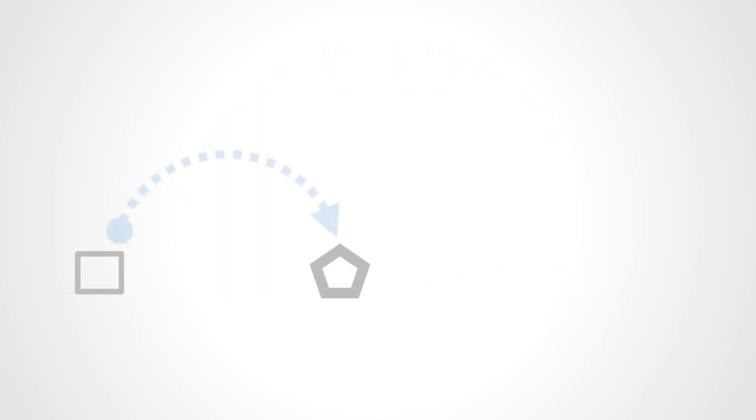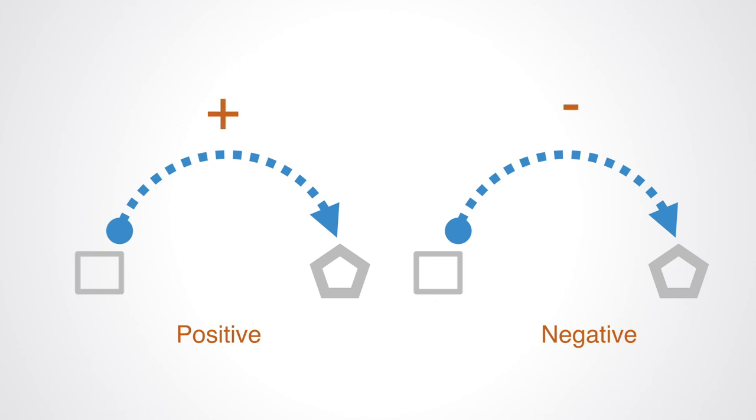There are two types of cause and effect relationships in CLDs, positive and negative. A positive relationship is depicted by the plus symbol at the arrow's head, whereas a negative relationship is depicted by the minus symbol at the arrow's head.